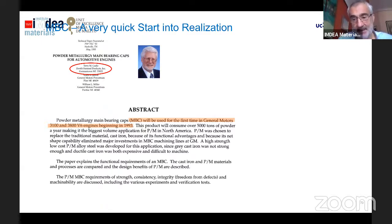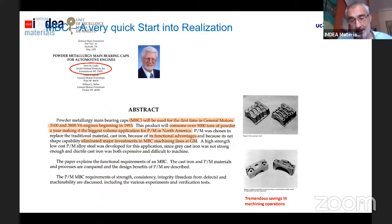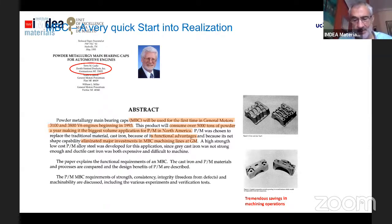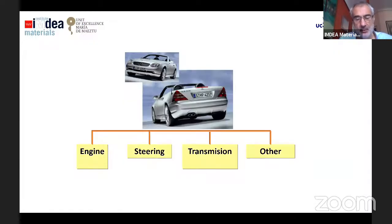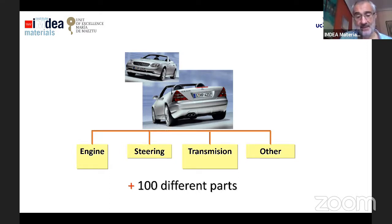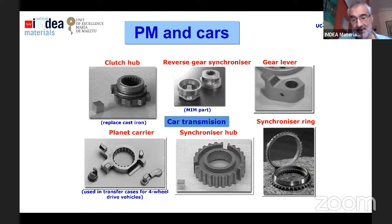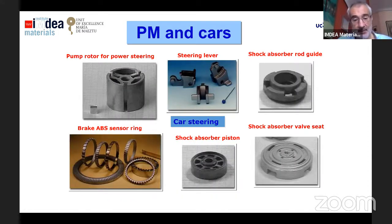After the gear and the valve seat, a lot of bearings were developed, along with many other interesting parts. One very interesting is the main bearing cap — a relatively large part with a lot of forces involved — a really important improvement for the industry. Today you have a lot of PM parts in different areas of the car: the engine, the steering system, the transmission system, and many others. In car transmission, you have the synchronization hub, synchronization ring, and gear lever. This is for car steering and also the shock absorber piston. All the systems in the shock absorber are developed by powder metallurgy.